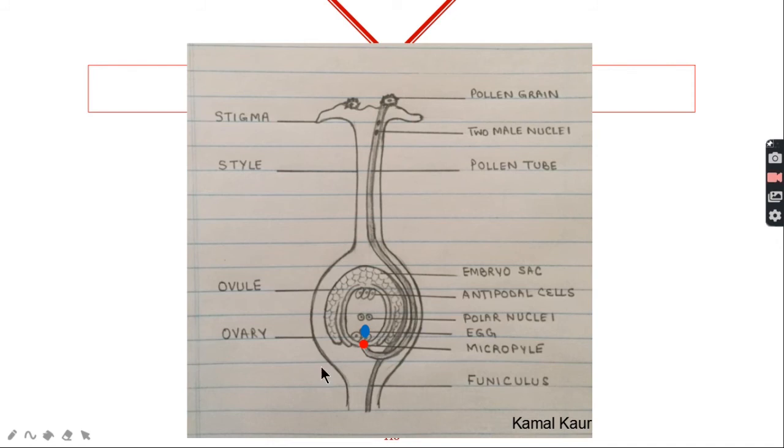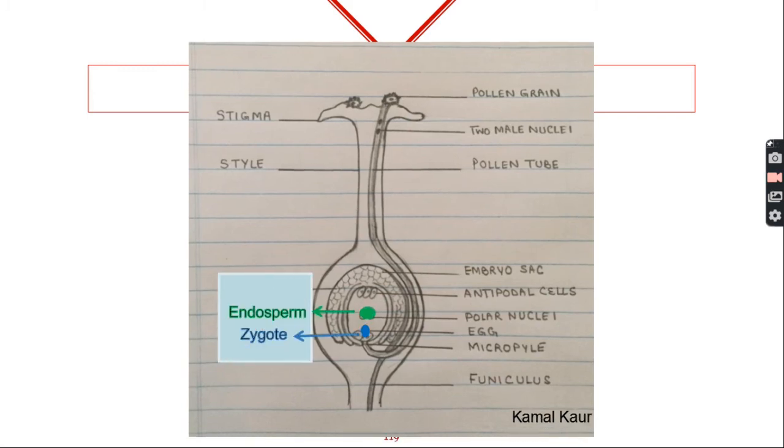Now the second male nucleus also enters the embryo sac and goes to fuse with the polar nuclei to form endosperm. So this is the second fertilization.